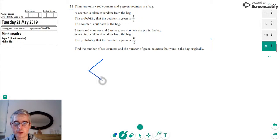We can represent this as a probability tree. The probability of getting a green counter is 3 over 7, which means that the probability of getting a red counter is going to be 4 out of 7. So this is the green one at the top and the red one below.